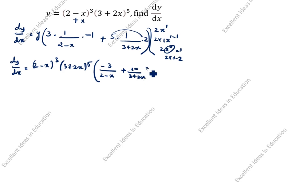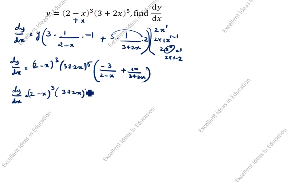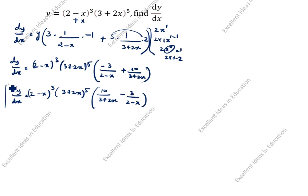So dy/dx is equal to (2−x)³·(3+2x)⁵ · [10/(3+2x) − 3/(2−x)]. This is the first method.